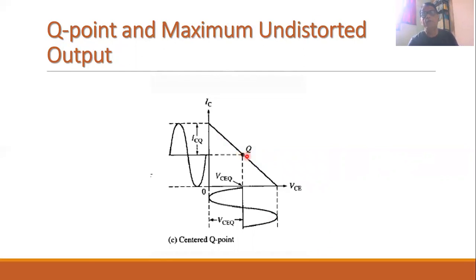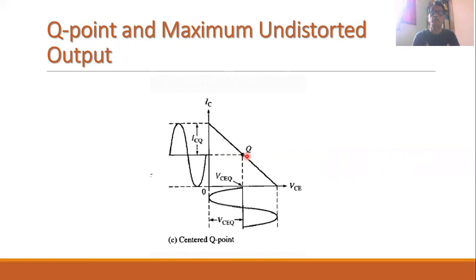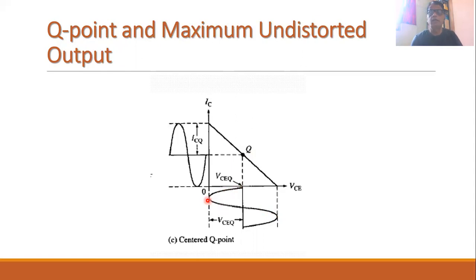If we plot the Q point, the position of the Q point can be set by using the biasing circuit. The biasing circuits are responsible for the initial position of the Q point. We can adjust the biasing circuit to set the Q point at the center of the DC load line. When it is at the center, we get a non-distorted output — there will be no clipping on either the negative or the positive half cycle, and we will get a complete sinusoidal AC output when the input AC signal is applied.